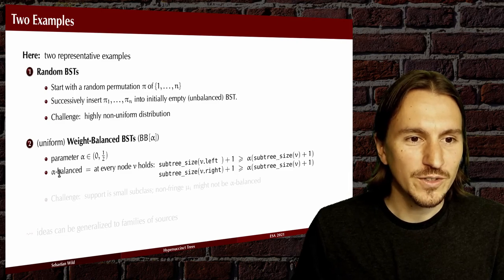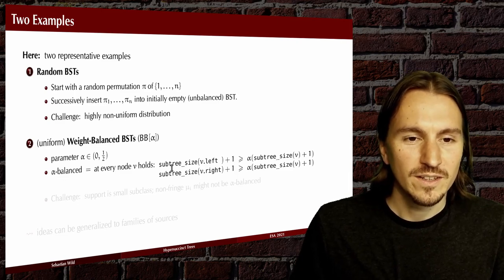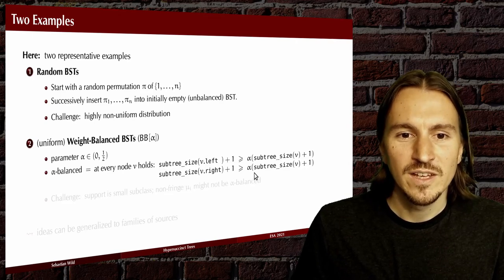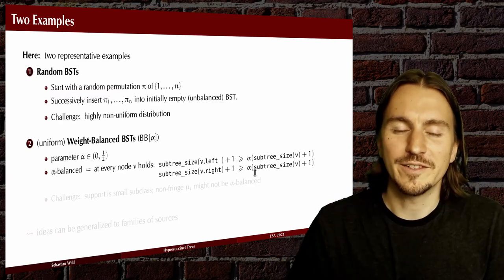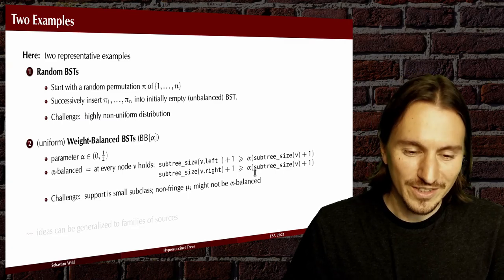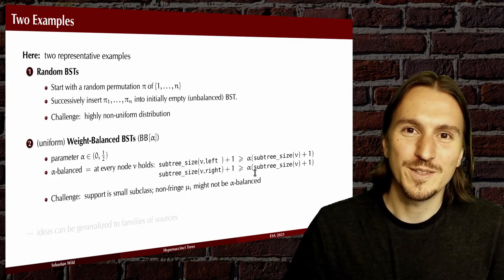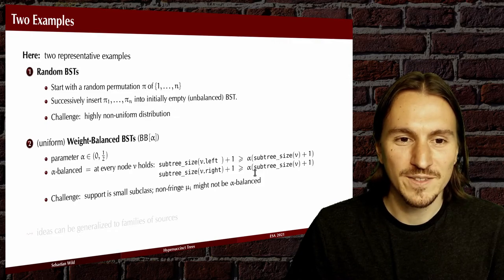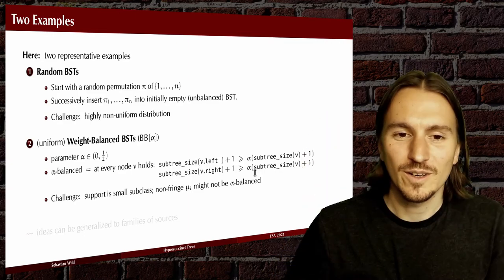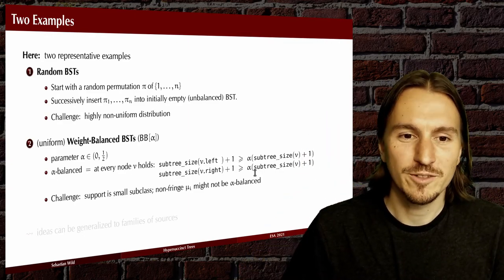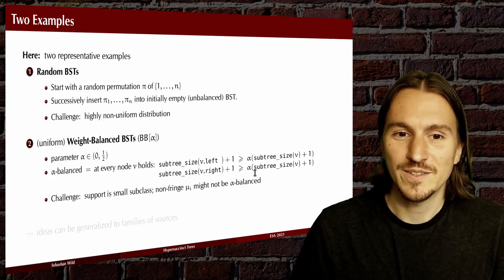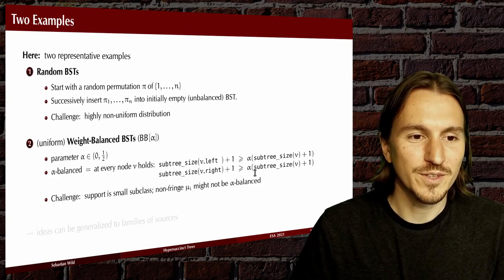The second example — uniform weight-balanced trees — are defined as follows. A node is alpha-balanced if its left subtree and right subtree sizes are each at least an alpha fraction of its entire subtree size. The challenge is that first it's a fairly small class, and second, if you take a micro tree somewhere in the middle and remove the child micro trees, the resulting micro tree is not necessarily alpha-balanced, so we have to work around this issue.